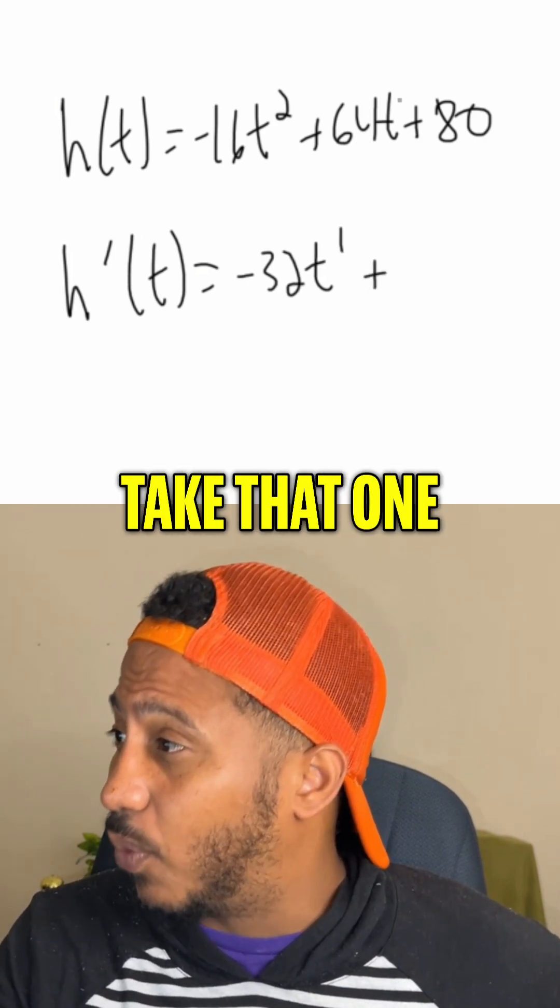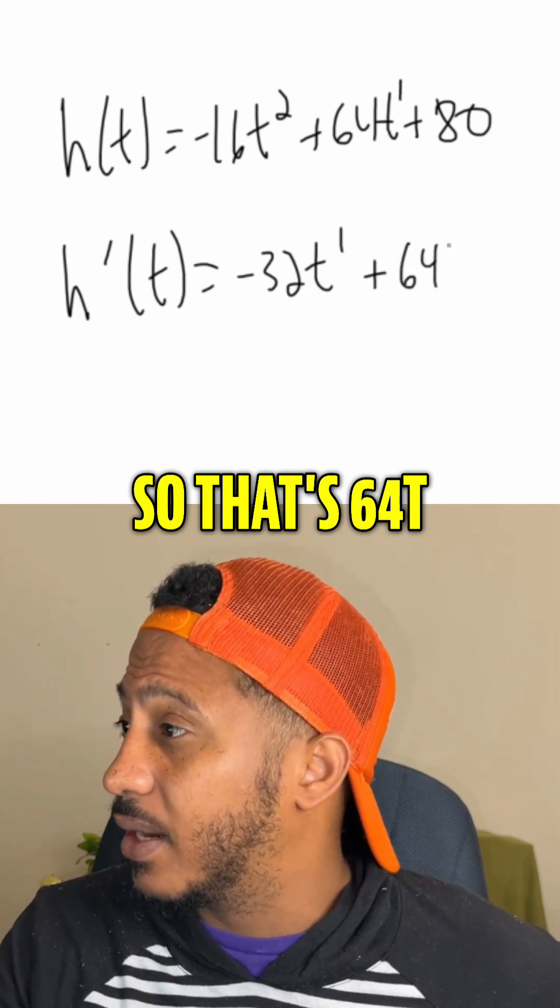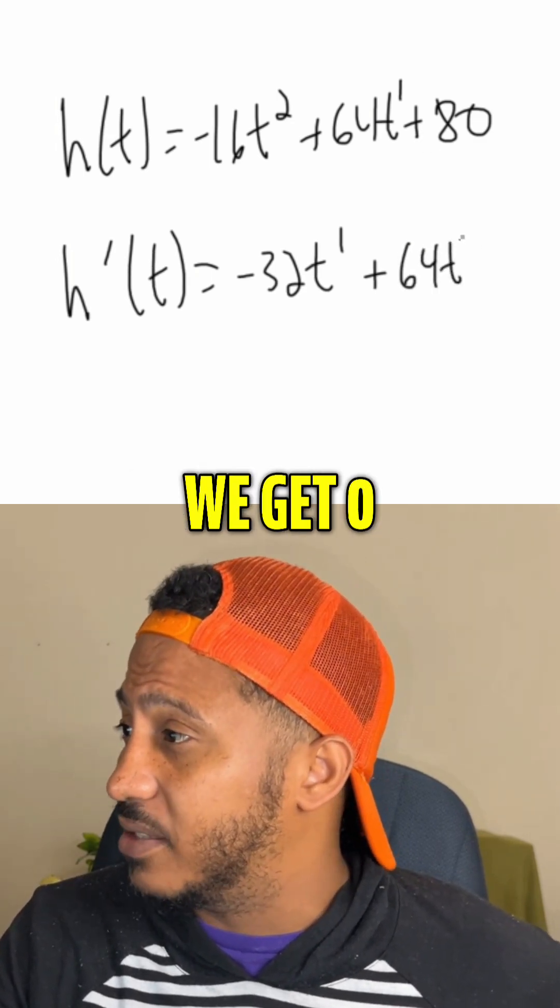same thing here. Take that 1, invisible 1, bring that down in front, multiply it by the coefficient in front. So that's 64t and then subtract 1 from the power, we get 0.